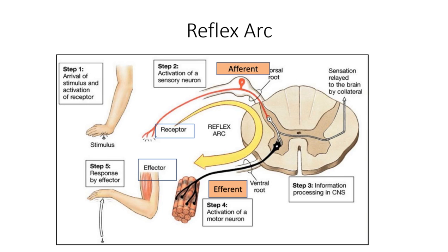A reflex occurs when the reflex arc is intact. The reflex arc includes all the neural pathways involved. Whenever there is any stimulus, first there will be a receptor to sense that stimulus. Afferent nerve fibers carry the impulse to a coordinating center, which can be the spinal cord or higher centers. From there, efferent fibers carry the impulse back and synapse on an effector — a muscle group or other tissue. The components of the reflex arc are: receptor, afferent, coordinating center, efferent, and effector.